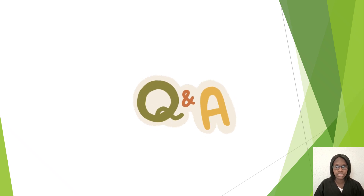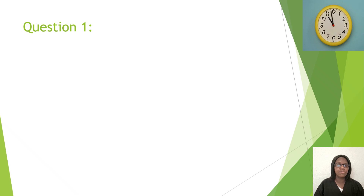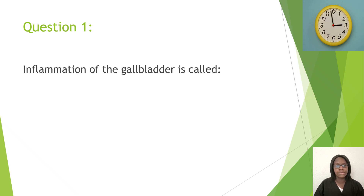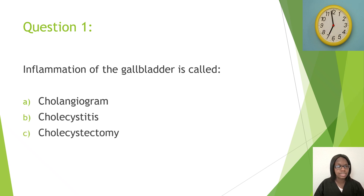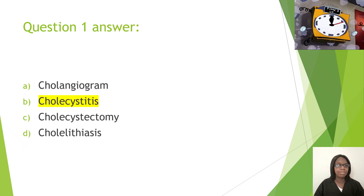Question one: Inflammation of the gallbladder is called — A, cholangiogram; B, cholecystitis; C, cholecystectomy; D, cholecystitis. The correct answer is B, cholecystitis. Anytime you see 'itis,' you know it means inflammation. Think of 'chole' when you see gallbladder-related terms.